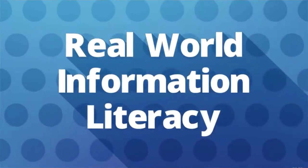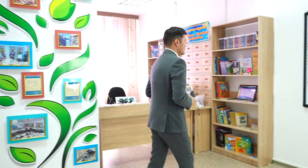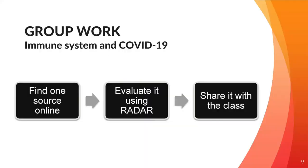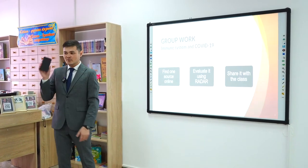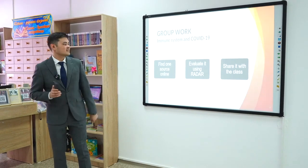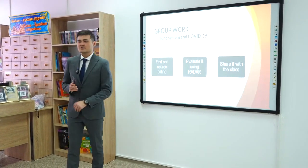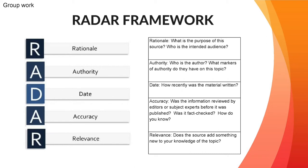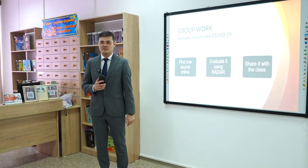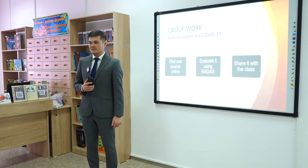Let's move on to the next stage. In this part of the lesson, we are going to work on developing our information literacy skills. First, in groups of four, you need to find one source online on the topic immune system and coronavirus using your mobile devices. Second, you need to evaluate this resource using the framework called RADAR. And finally, you will have to share this information with the rest of the class.